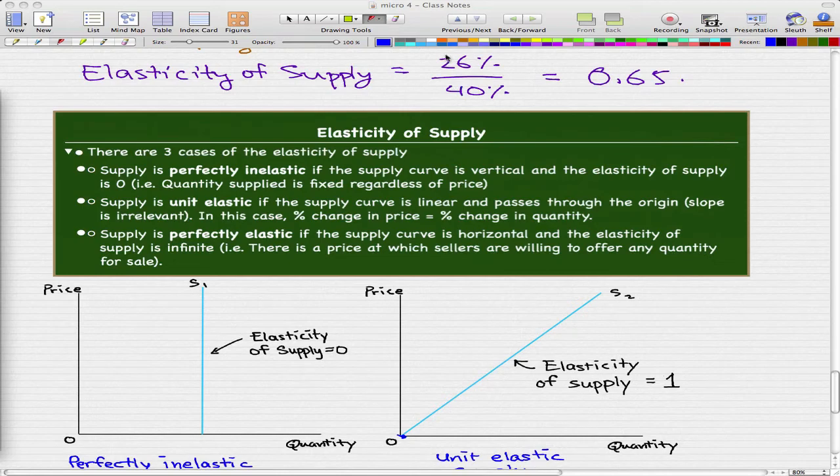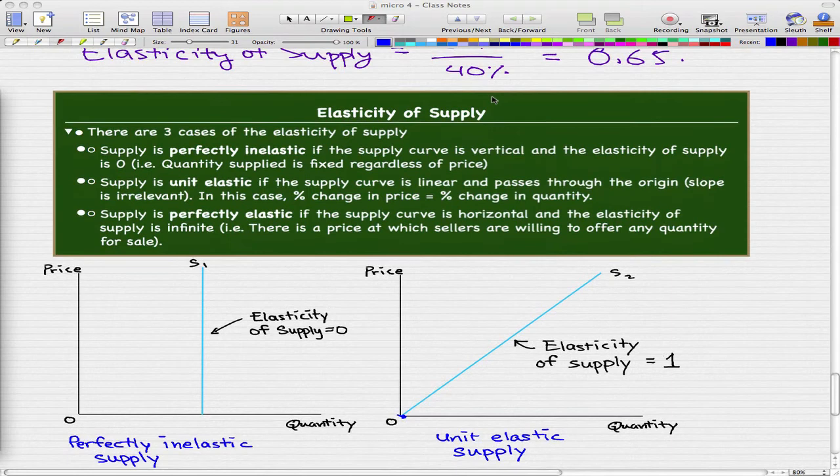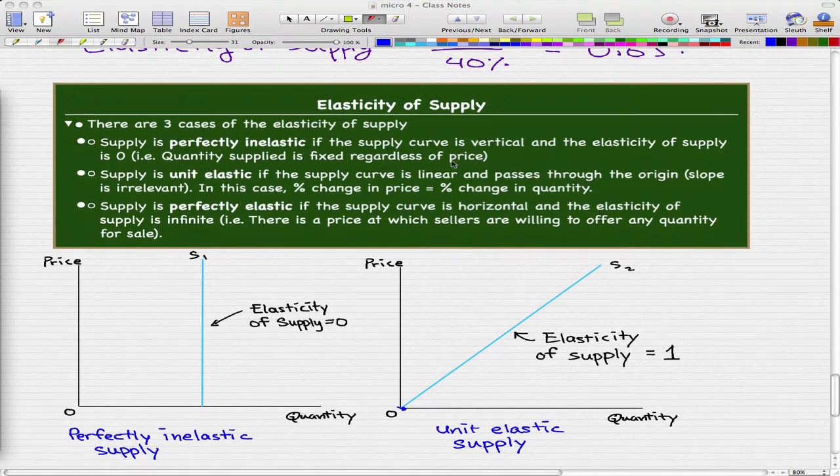If we change the 40% to a 26%, that is when we have unit elastic supply. And this is really a special case that occurs when the supply curve passes through the origin.